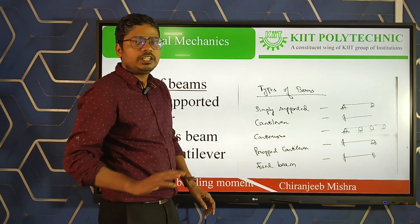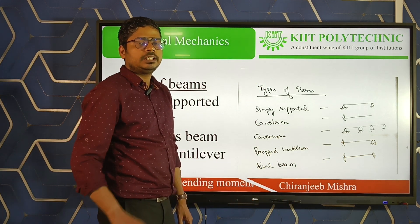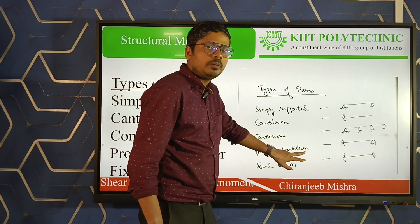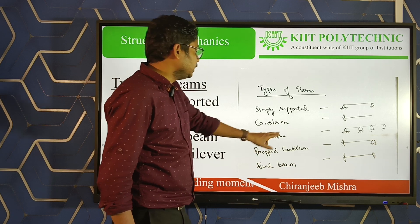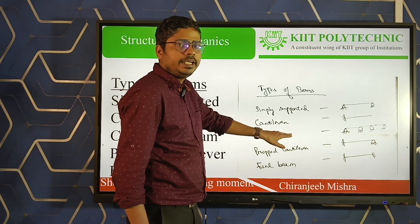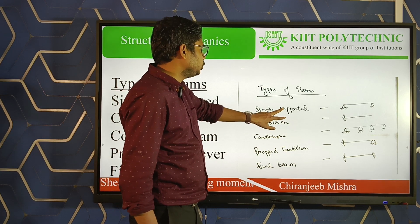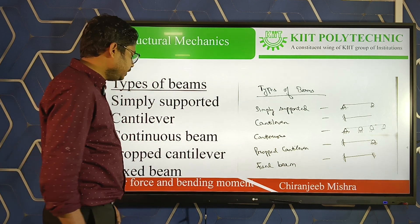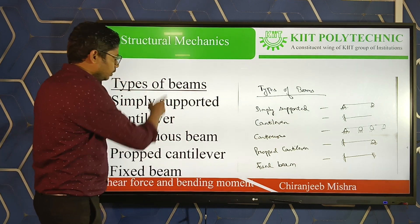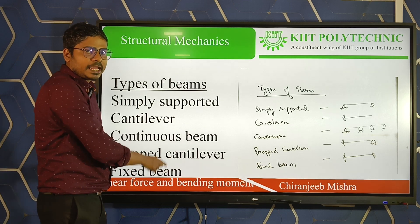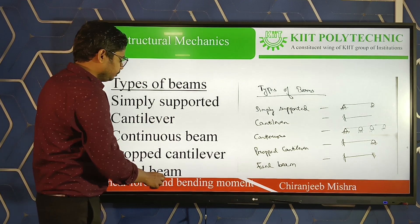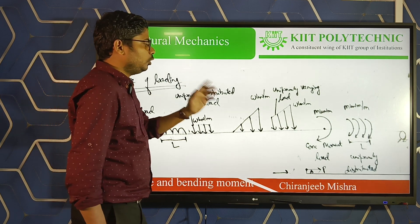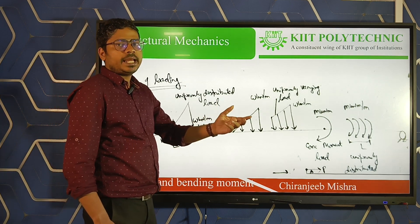Fixed beam and continuous beam are indeterminate structures — that is a different topic discussed in structural analysis. Simply supported and cantilever beams are determinate structures. Now we move forward to the next slide on types of beams, and then types of loading.